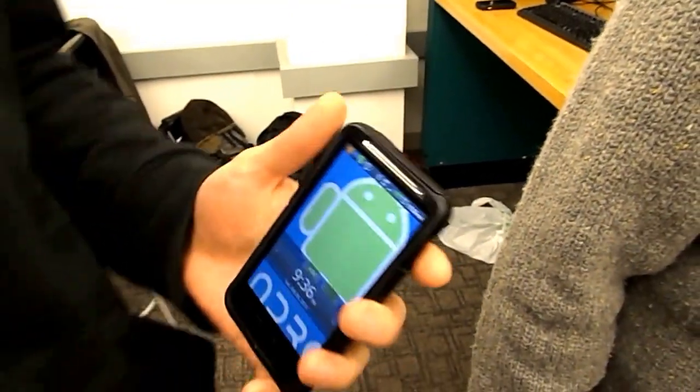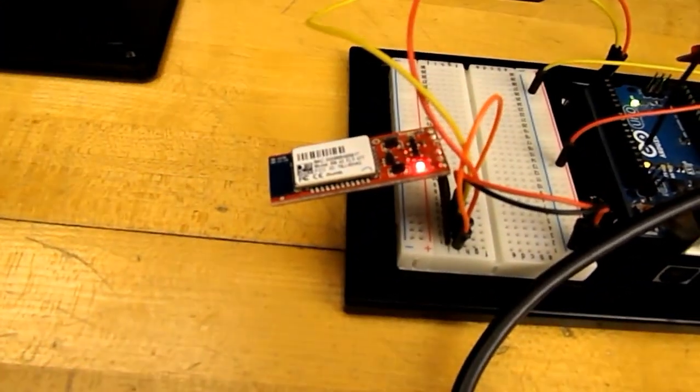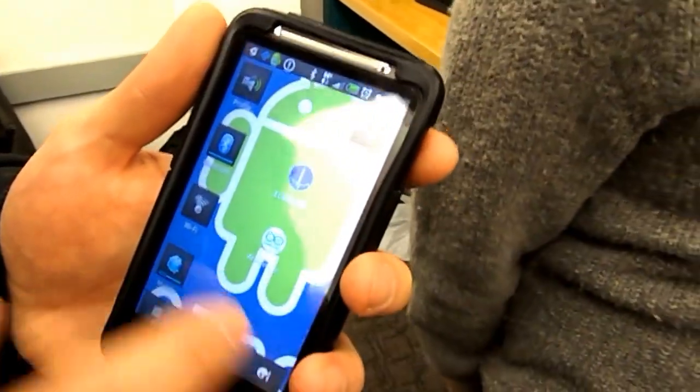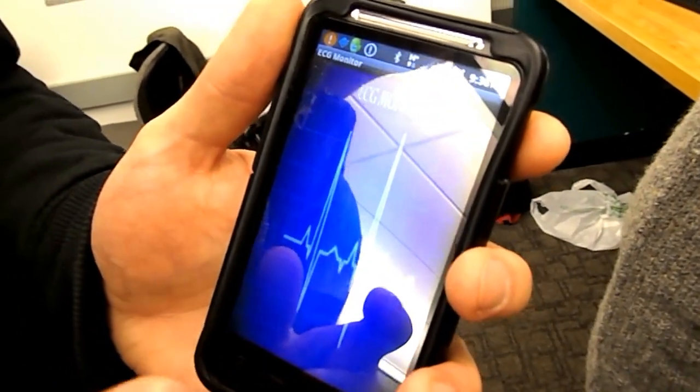Well as you can see the Bluetooth module is blinking red, and that means it's not yet connected. So in order to pair it we access the ECG monitor app that we've developed.